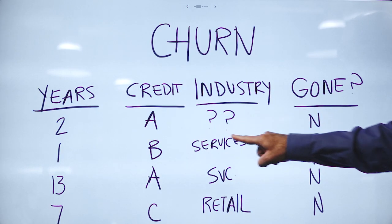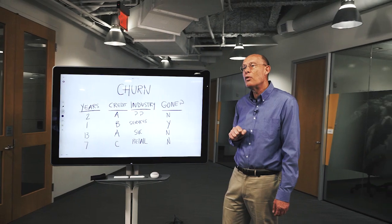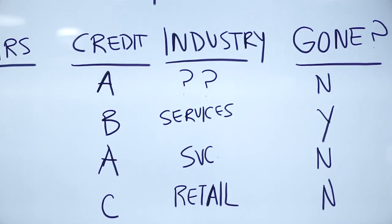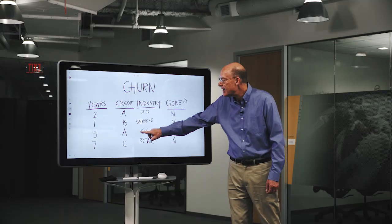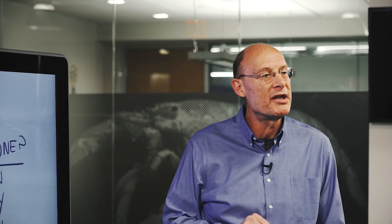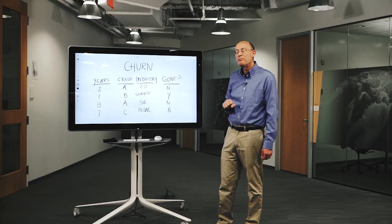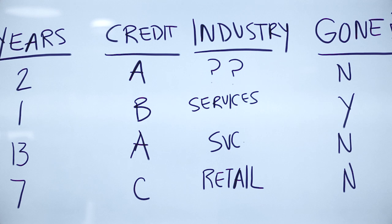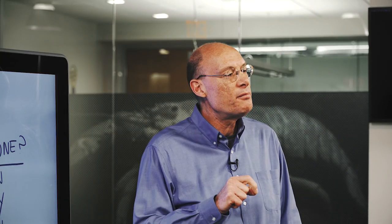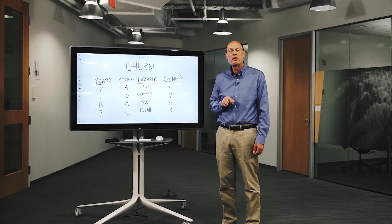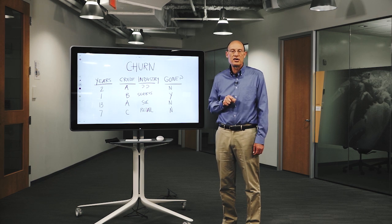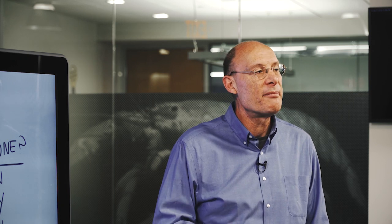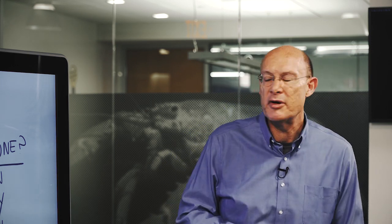First of all, we have a missing element. We might want to understand why it's missing and find what it should be replaced with. You can also see inconsistent coding — this says 'services,' but here's 'SVC,' which means services as well. We would want to make those consistent. A more subtle point: notice that credit here says A, B, C. That's a scale, but unless you put it into numbers, your machine learning algorithm may not know that there's an order to these. You'll get better results if you find and fix problems and also use opportunities in your data that comes from understanding it.